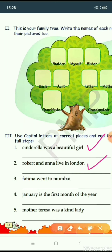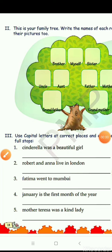Number three: Fatima went to Mumbai. F of Fatima will be capital because Fatima is a proper noun — the name of a particular person. M of Mumbai should also be capital because Mumbai is the name of a particular city. So we write: Fatima went to Mumbai. Full stop.